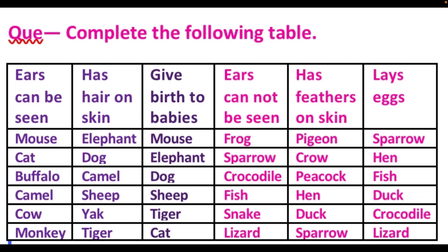Animals whose ears cannot be seen: frog, sparrow, crocodile, fish, snake, lizard. Animals which have feathers on skin: pigeon, crow, peacock, hen, duck, sparrow. Animals which lay eggs. We can sum up that animals whose ears cannot be seen and which have feathers on skin — or which have hard skin — they lay eggs.